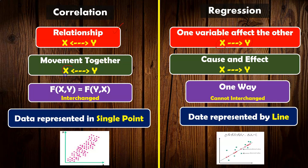In correlation, variables move together. If X increases, Y also increases — that is positive correlation. If X decreases, Y also decreases — also positive. If X increases and Y decreases, or X decreases and Y increases, that is negative correlation. Regression is a higher level of correlation, and here we predict the value of Y from X. In correlation, the interchange property is satisfied — the correlation of X and Y equals the correlation of Y and X, so there is no need to compute both. But in regression, this is not the same — it cannot be interchanged.